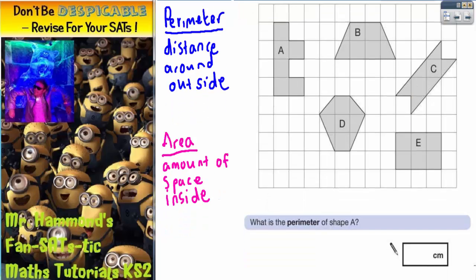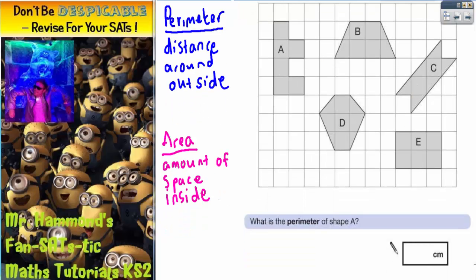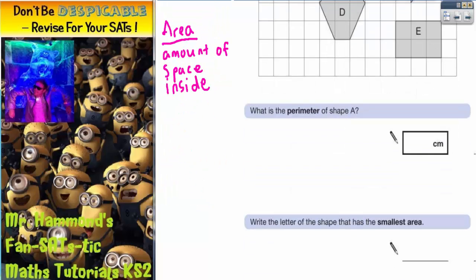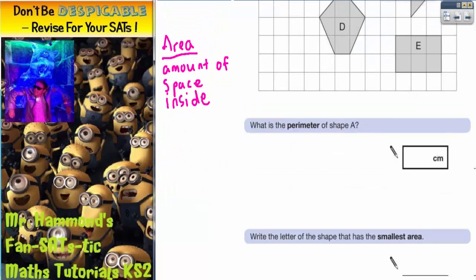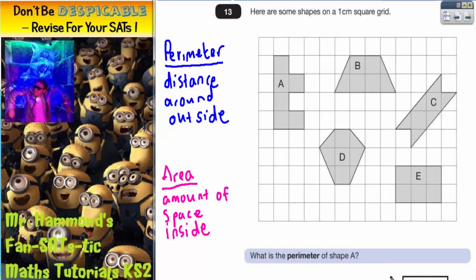What we've got to do is find out what the perimeter of shape A is and later on we're going to have to find a shape with the smallest area. So this question is all about understanding the difference between perimeter and area. So I've already written a few notes on the side here. You've got to remember that perimeter is the distance around the outside of the shape whereas area is the amount of space inside the shape.